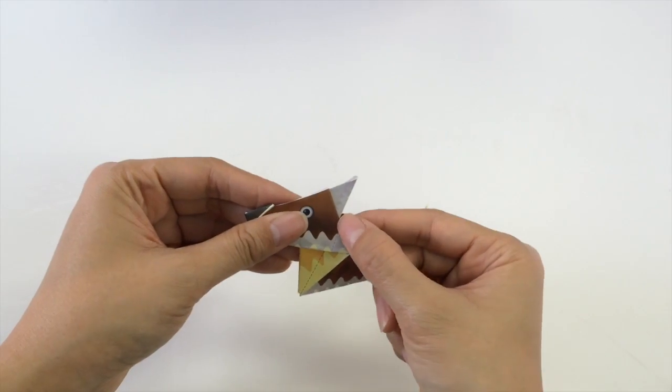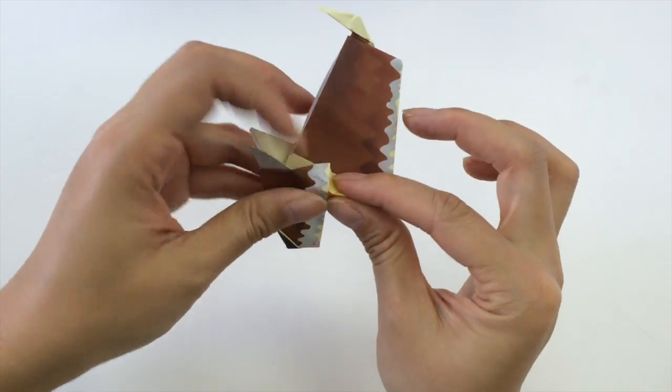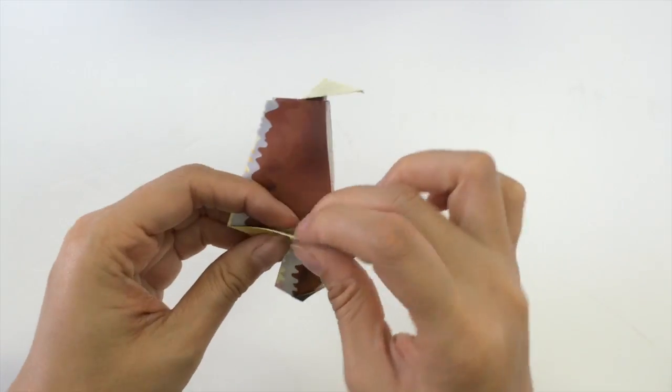Next, we're going to tuck in these two sides of the dog's collar like this one and do the same for the other side. Tuck it in.